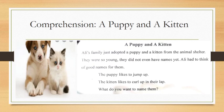Okay, next you have comprehension. Now, puppy and a kitten. So let's start this. On the side, you are looking at a pic, puppy and kitten. Ali's family just adopted a puppy and a kitten from the animal shelter. They were so young, they did not even have names yet. They were so small that they didn't have any names. Ali had to think of good names for them.